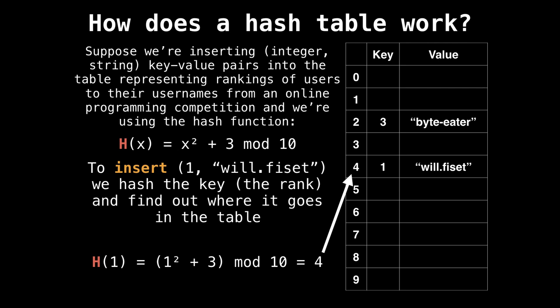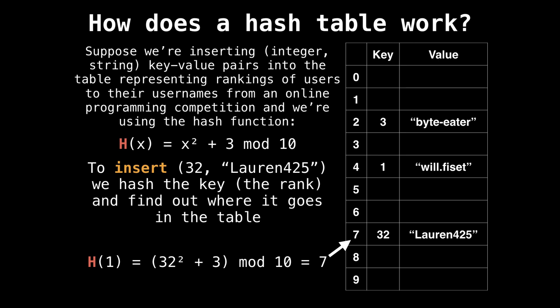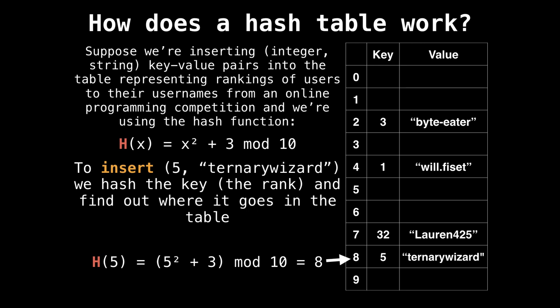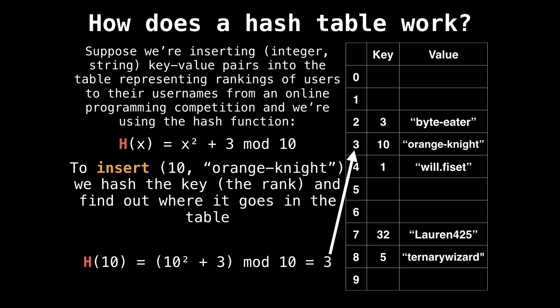Alright, now, this next user will Fizze, which is usually what I call myself in online programming competitions. He is rank one. And if we hash one, then we get four. So at index four, then we're going to put the key and the value for William, or will dot Fizze. Next, if we want to insert Lauren 425, who's got rank 32, and we hash 32, and we put her in the table where she goes, then we can do the same thing for ternary wizard, who has rank five, and insert orange knight, again, by hashing the key, finding out where it goes. So as we keep doing this, we keep filling the table, but eventually, we're bound to have a collision.